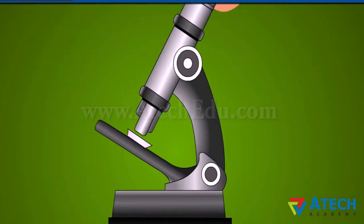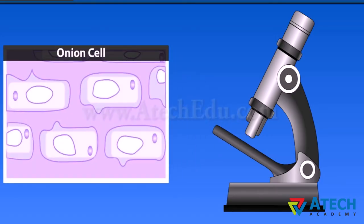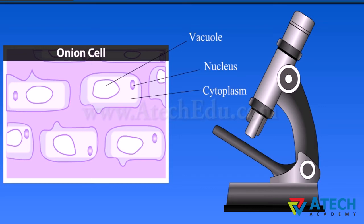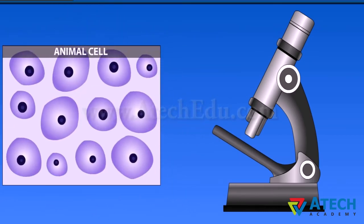The small microscopic structures seen in an onion peel are the basic building units of the onion bulb. Each cell consists of a vacuole, nucleus, and cytoplasm. Similarly, when a thin skin sample of an animal is seen under a microscope, similar basic units are observed. These cells have dark nuclei at the centre.